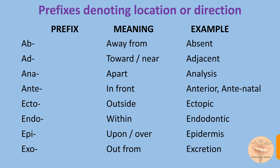'Ecto' means outside; 'endo' means within; 'epi' means upon — epidermis, epicalyx. 'Exo' means out from. There are some other prefixes denoting location such as 'infra', meaning under or below, as in infra-orbital. Also 'para', which means near or beside — for example, paranasal sinuses. And 'retro', meaning behind or back, as in retromolar.